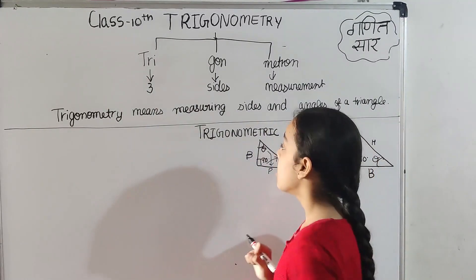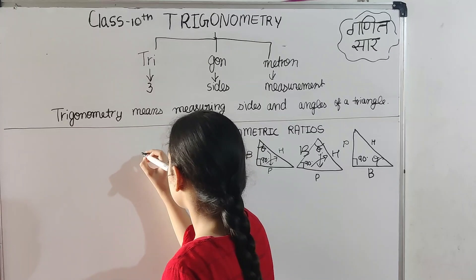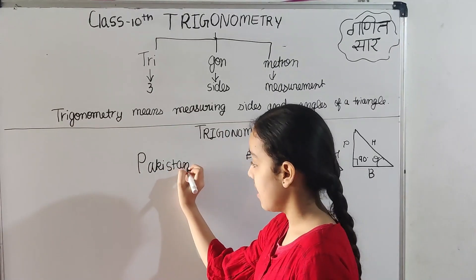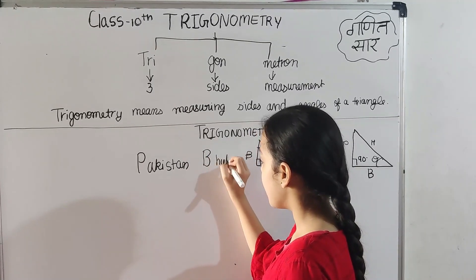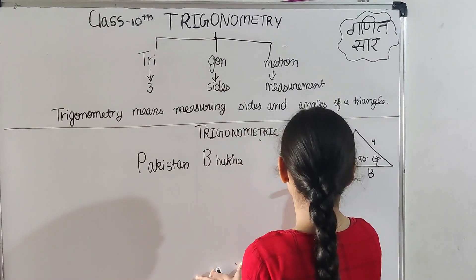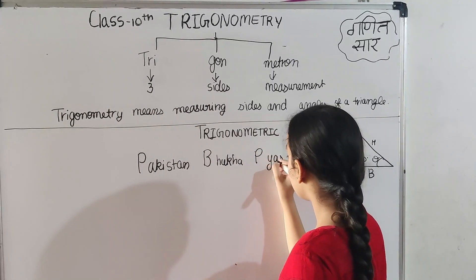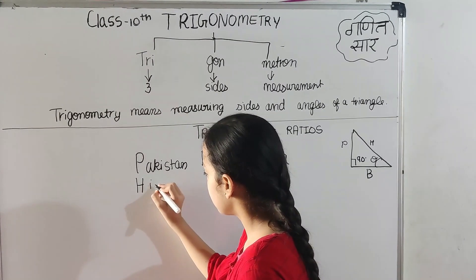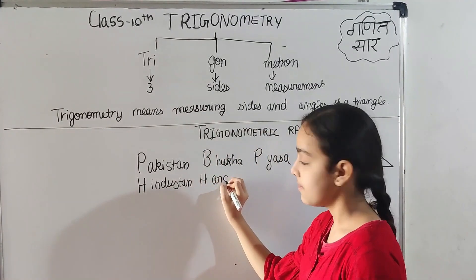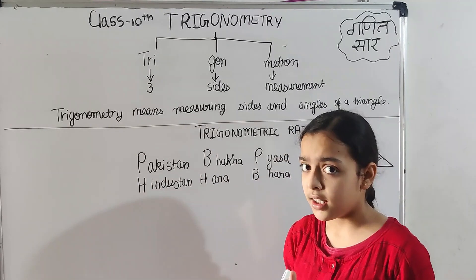Now let's see the six trigonometric ratios. I have prepared a slogan to learn them. The slogan is: Pakistan Bhoka Piasa, Hindustan Hara Bhara. If you are Indian you can learn it easily. If you are from another country, you can prepare another slogan for yourself.